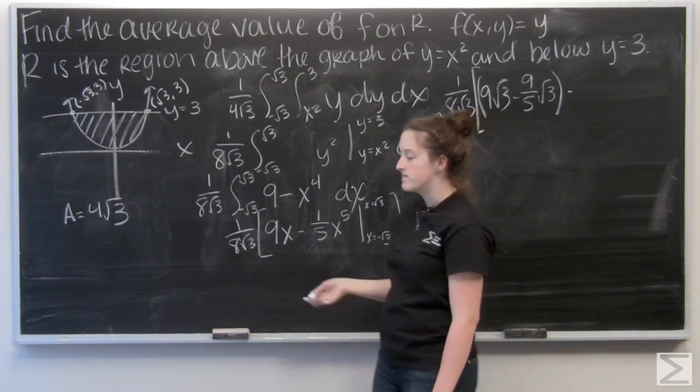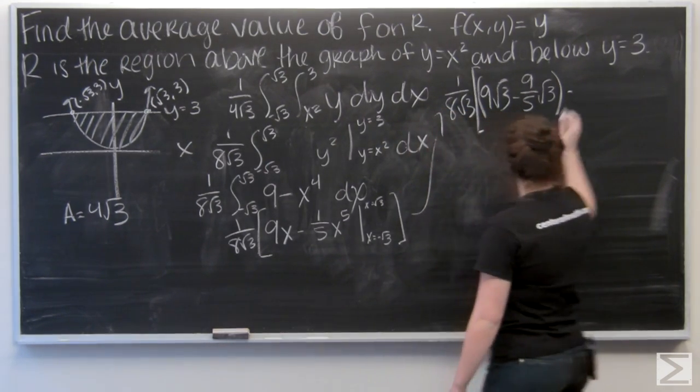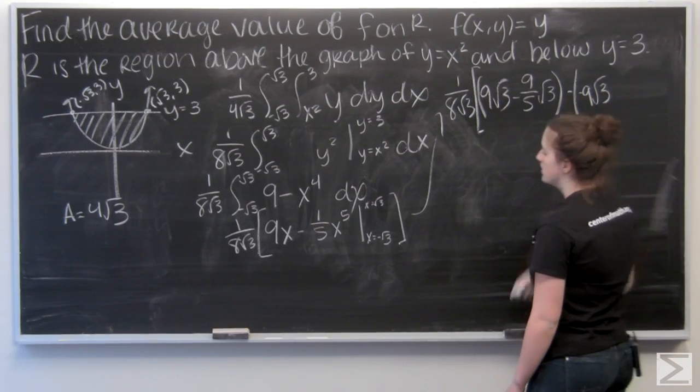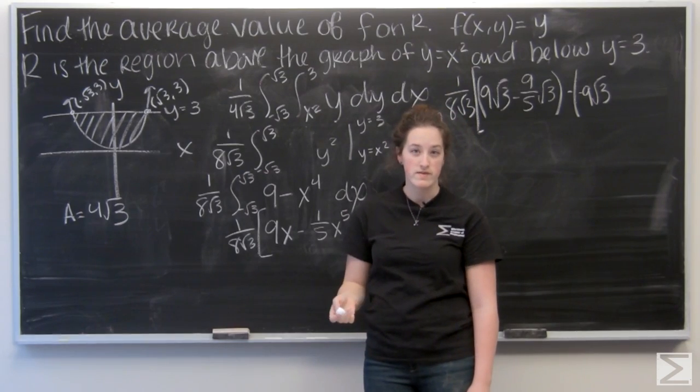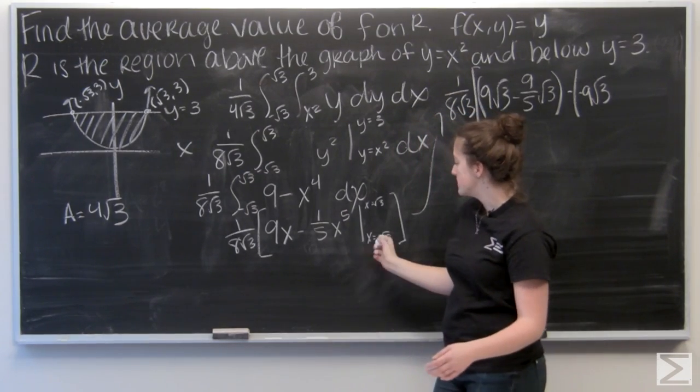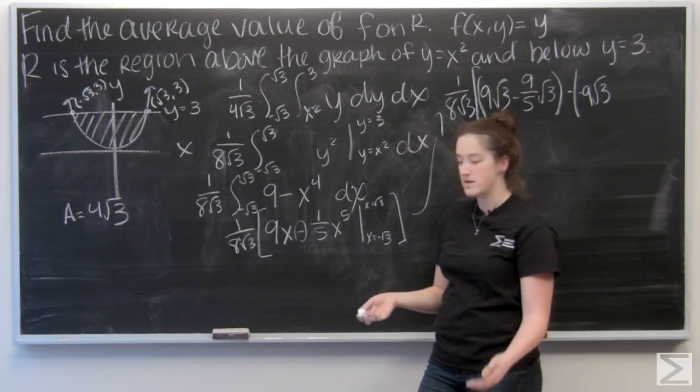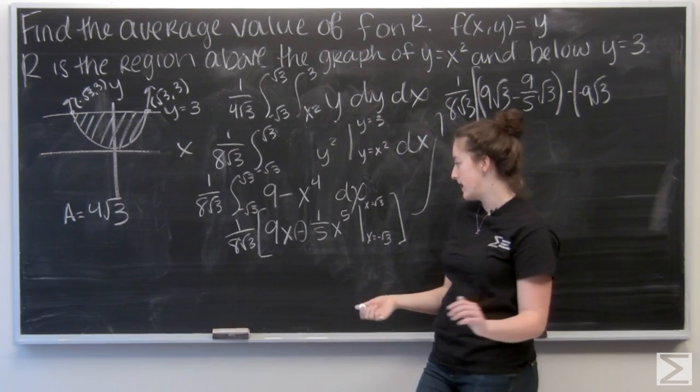Now let's plug in negative root 3. So negative 9 square root 3. And then for negative root 3 to the 5th, I end up with 6 negative signs. Counting this as subtraction. So I'm going to be adding. It's going to be plus 9 over 5 root 3.